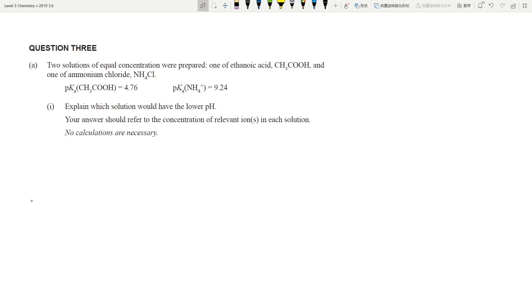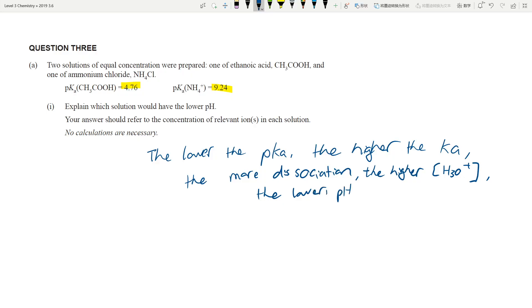The first thing you need to remember: you've got two pKas, one is 4.76 and one is 9.24. The lower the pKa, the higher the Ka. The higher the Ka, the more dissociation. The more dissociation, the higher the concentration of H3O+. The higher the H3O+ concentration, the lower the pH. The lower the pH, the stronger the acid.